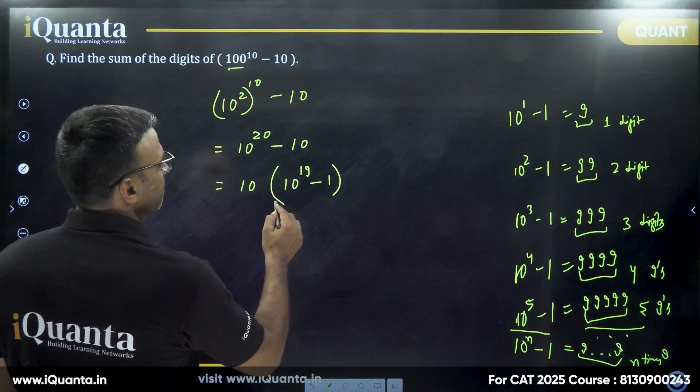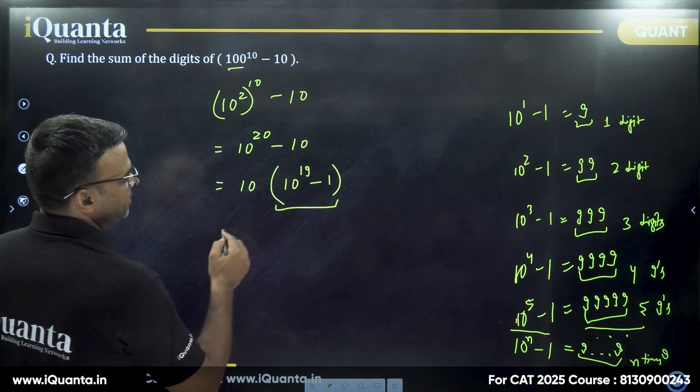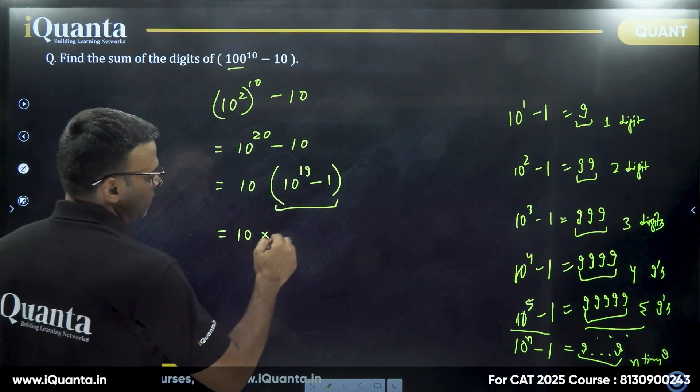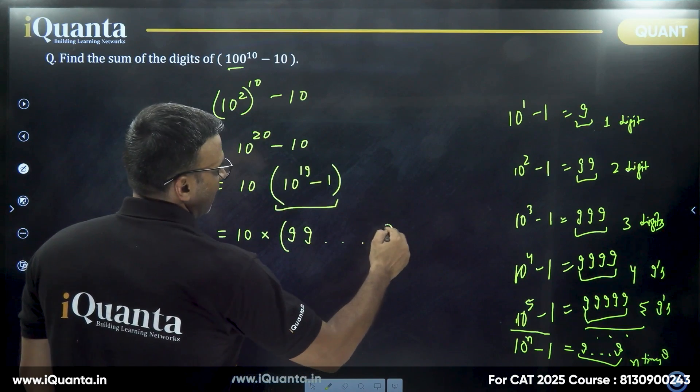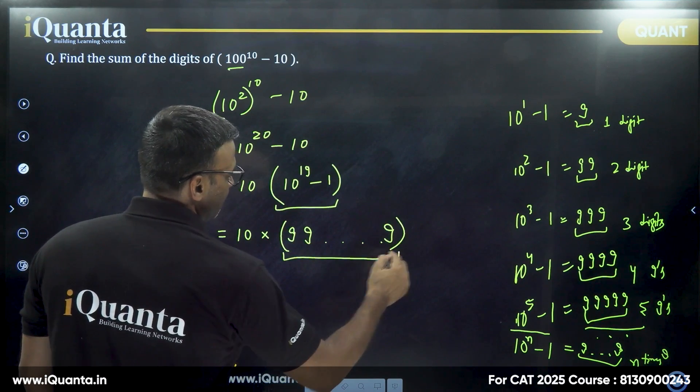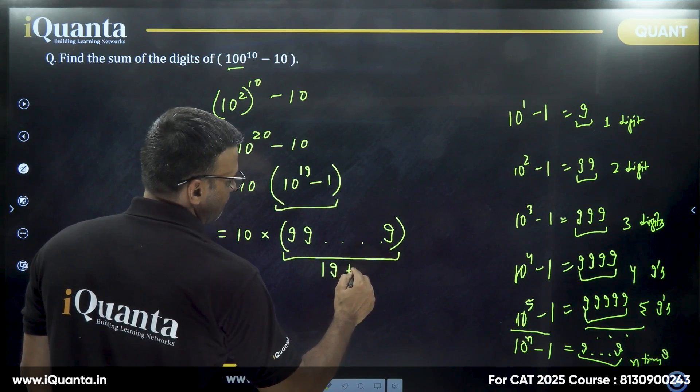So this number is going to be 19 times 9. So it is 10 into 999, how many times? 19 times 9.